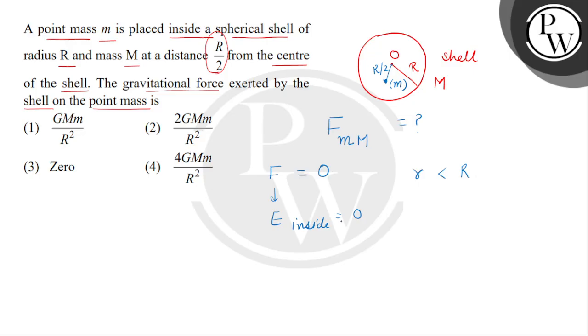So yahaan par hum bol sakte hai ki jo R by 2 means point P hai, wo shell ke under hai. So we have the gravitational field inside equals to zero.